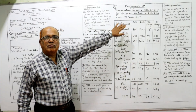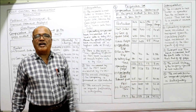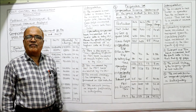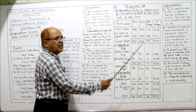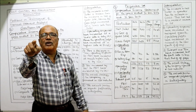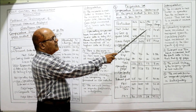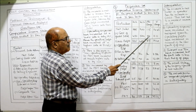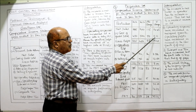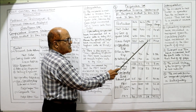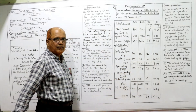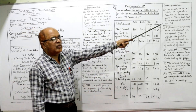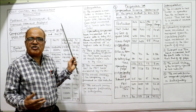Now calculate absolute and percentage changes. Absolute change is current year minus last year. For net sales: 900 minus 785 is 115; percentage change: 115 divided by 785 into 100 is 14.65%. For COGS: 500 minus 450 is 50; 50 divided by 450 into 100 is 11.11%. For gross profit: 400 minus 335 is 65; 65 divided by 335 into 100 is 19.40%. Same procedure for all values, then we move to interpretation.